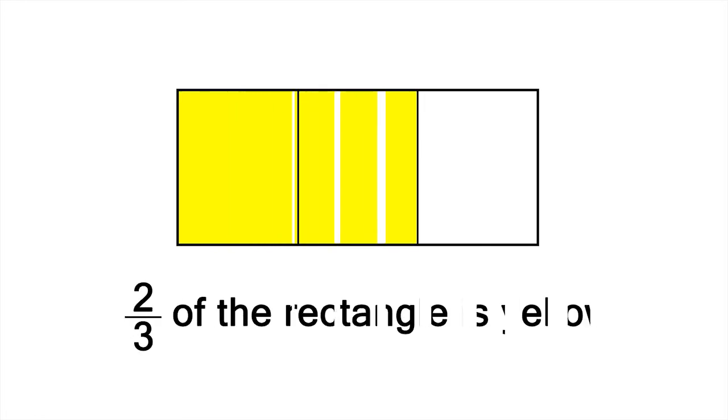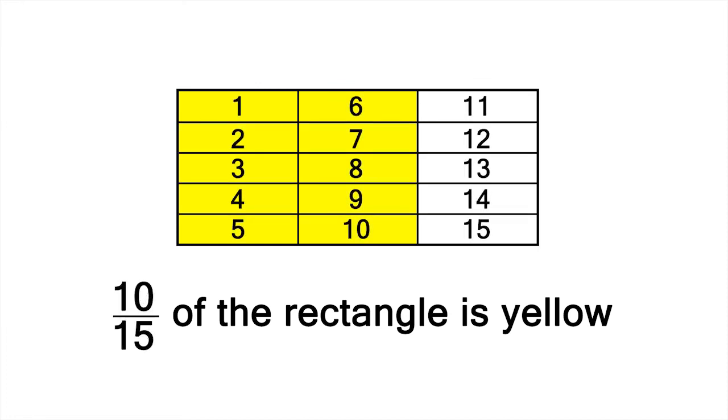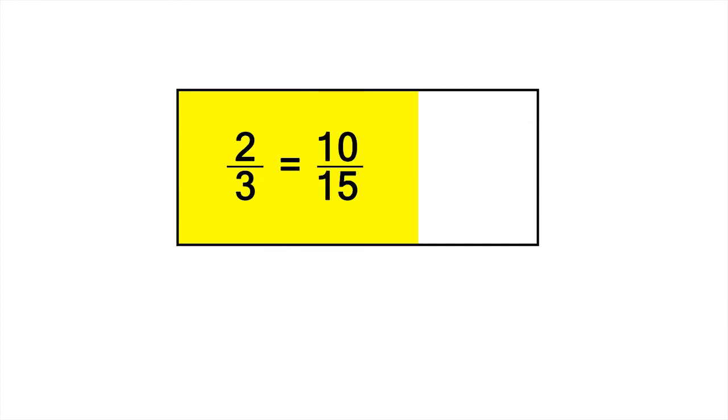Another way to see this is using a diagram. Let's divide a rectangle up into thirds, and colour two-thirds of the rectangle yellow. Now let's see what ten-fifteenths looks like. The relative amount of yellow hasn't changed. So, two-thirds has the same value as, or is equivalent to, ten-fifteenths.